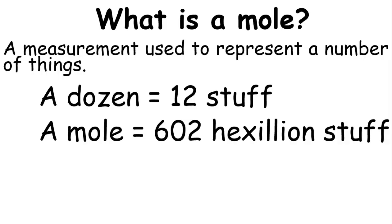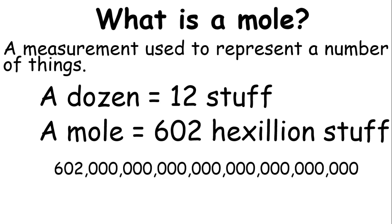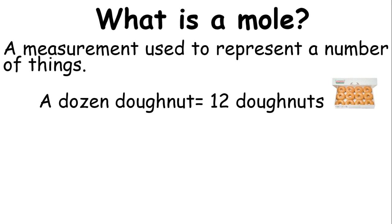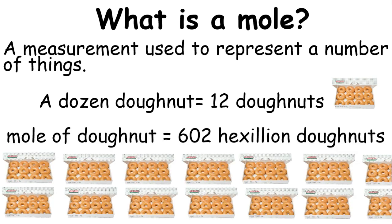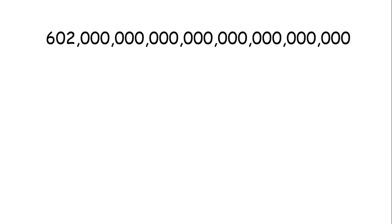Wait a minute. Just to give you a visualization about how huge that number is, you need to put 21 zeros in front of 602. So that is a mole. Let's go back to the donut. A dozen donuts, you have 12 donuts. A mole of donuts, you will have 602 hexillion donuts.